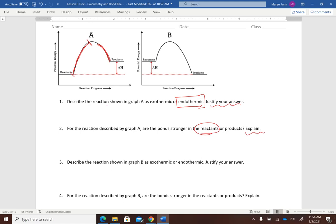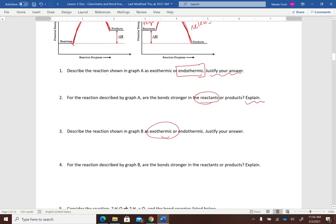Then we have to do the same thing for graph B. Graph B, endothermic or exothermic, here we're putting in just a little bit of energy to break the bonds and we're getting out a lot of energy when we form the products. So this is exothermic because we are releasing more energy than we are putting in. So overall we are getting energy out making this an exothermic reaction.